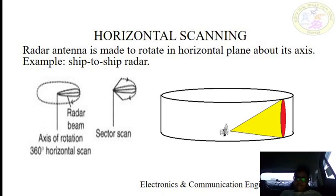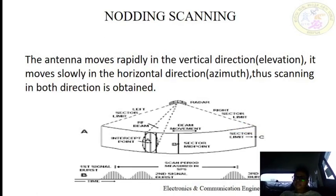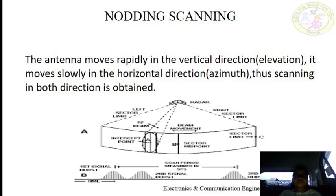Nodding is an extension of horizontal scanning. The antenna moves rapidly in the vertical direction but moves very slowly in the horizontal direction. Thus scanning in both planes is obtained. The system can be used to scan a limited sector or can extend to cover the complete hemisphere. This nodding can be used to scan for a limited sector or for a half hemisphere.